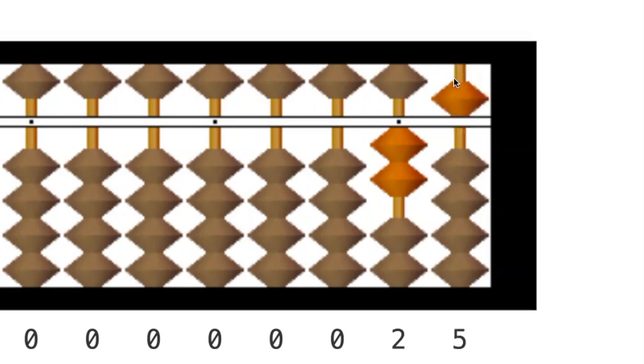What is this number? That's 25. How about this one? 5 and 2 is 7. That's 75. Next number? That's 175. This is how abacus is played.